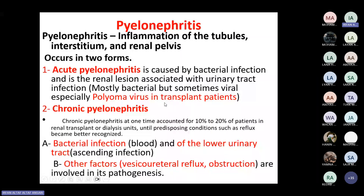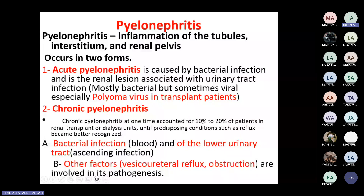Acute pyelonephritis is the majority of the time caused by bacteria, but in transplant patients you must look for the polyoma virus. Chronic pyelonephritis previously accounted for 10 to 20% of patients requiring renal transplant and dialysis, but now this percentage has decreased dramatically because we identify reflux at earlier stages and treat the patient to prevent chronic pyelonephritis.